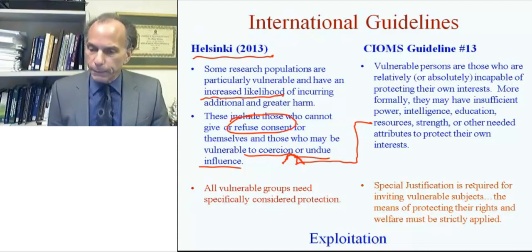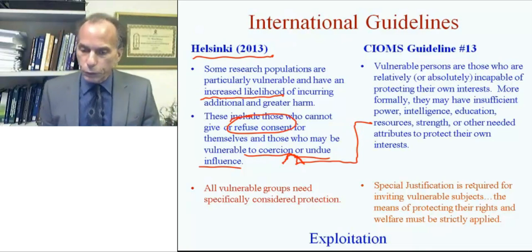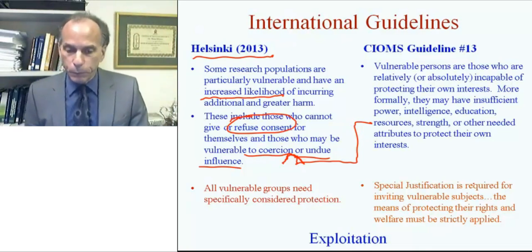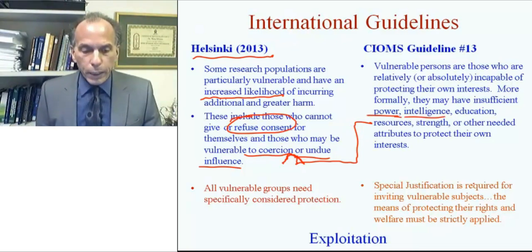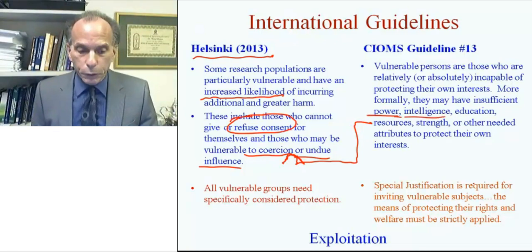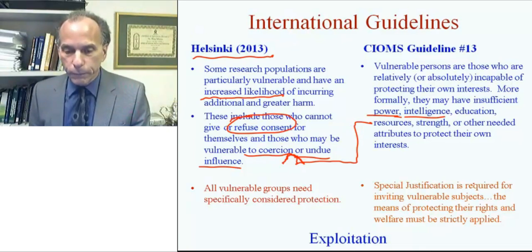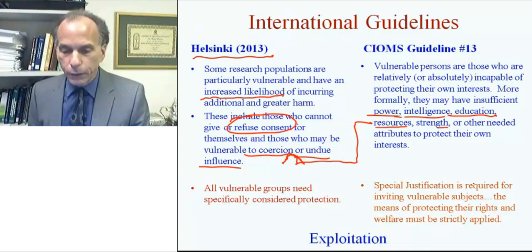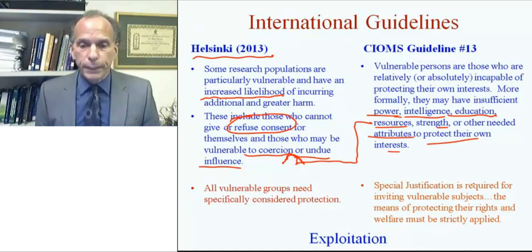More formally, they may have insufficient power, intelligence, education, resources, strength, or other needed attributes to protect their own interests. So those who are more likely to be vulnerable to coercion or undue influence will lack the following attributes: power, intelligence, education, resources, strength, or other needed attributes to protect their own interests.